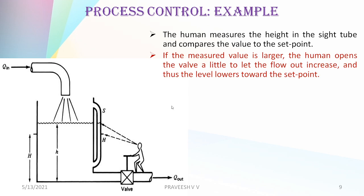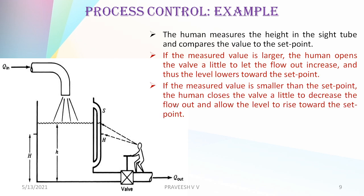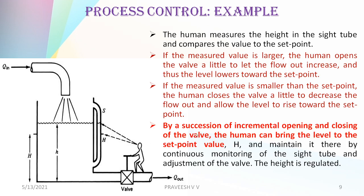The human measures the height in the side tube and compares it to the set point. If the measured value is larger than the set point, the human opens the valve a little to let the outflow increase and lower the level towards the set point. If the measured value is smaller, the human closes the valve a little to decrease the outflow and allow the level to rise. By successive incremental opening and closing of the valve, the human brings the level to the set point H and maintains it by continuous monitoring and valve adjustment.